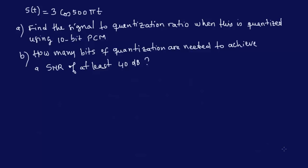So this is an audio signal comprised of a single sinusoidal term, which is the cosine here. So now you have two questions here. Question A: Find the signal to quantization ratio, SNR, when this is quantized using 10-bit PCM. And question B: